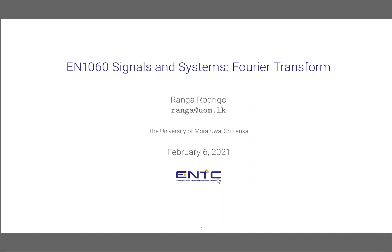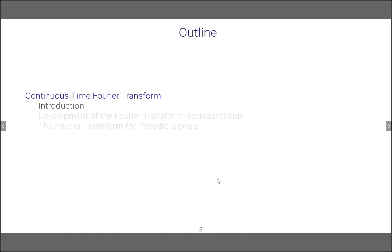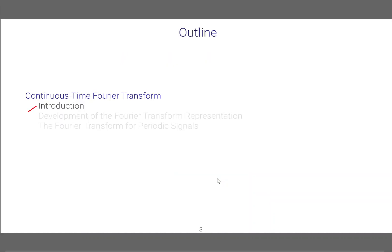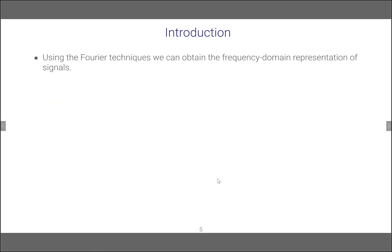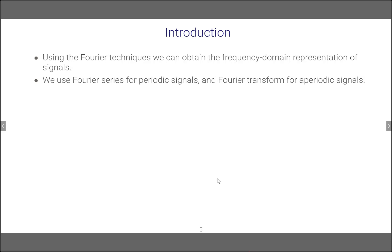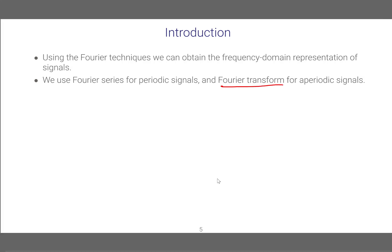Welcome. In this lesson we will look at Fourier transform. First we want to introduce what Fourier transform is and try to see the relationship between the Fourier series and the Fourier transform, then we can move on to do some examples, and after that we will look at the Fourier transform for periodic signals. Actually, Fourier transform is for aperiodic signals; Fourier series is for periodic signals as we have seen before. So using the Fourier techniques we can obtain the frequency domain representation of signals.